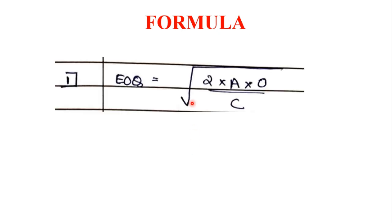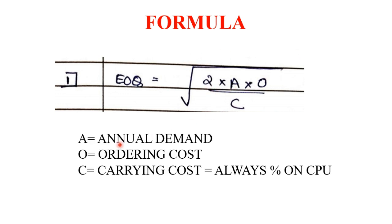The first and major formula is EOQ. The Economic Order Quantity is equal to the square root of 2 into A into O divided by C. Where A is your annual demand, O is ordering cost, and C is carrying cost which is always a percentage on CPU (cost per unit).